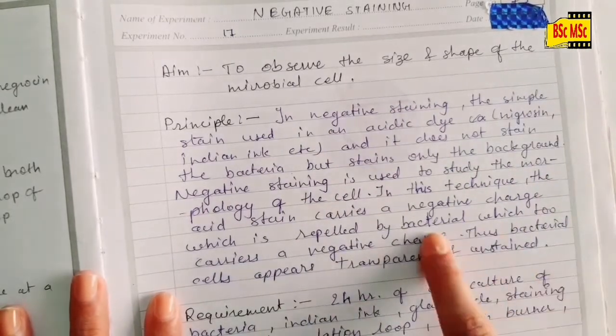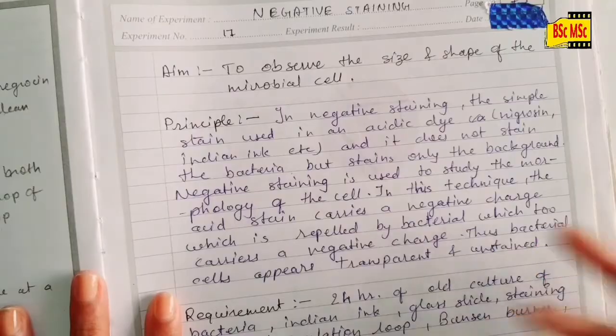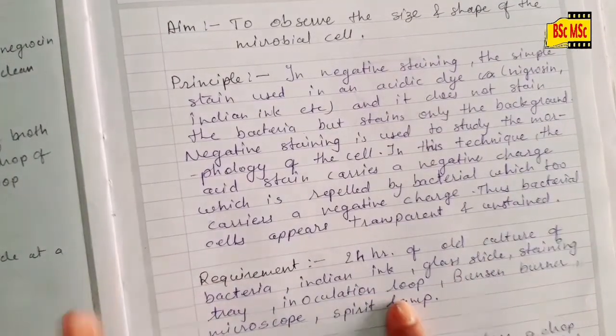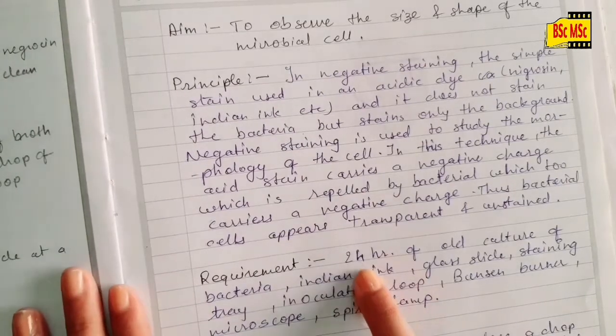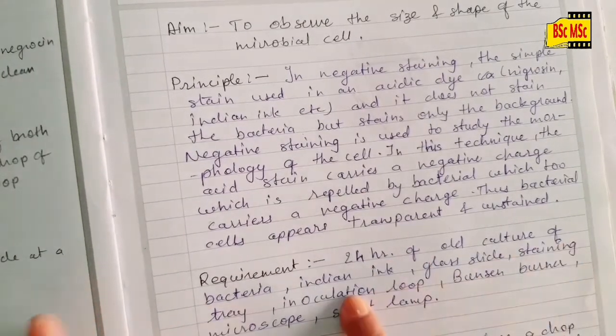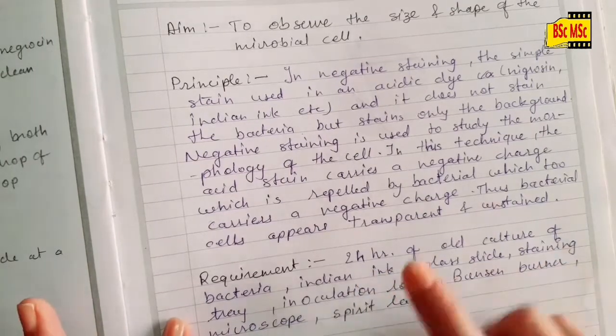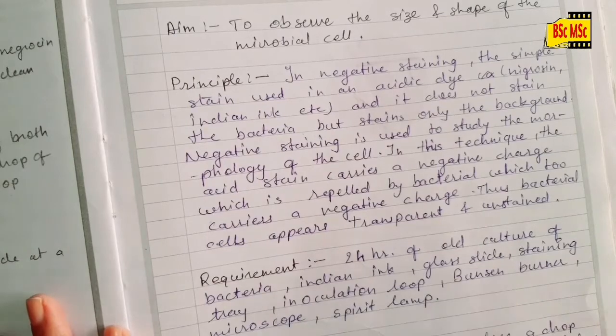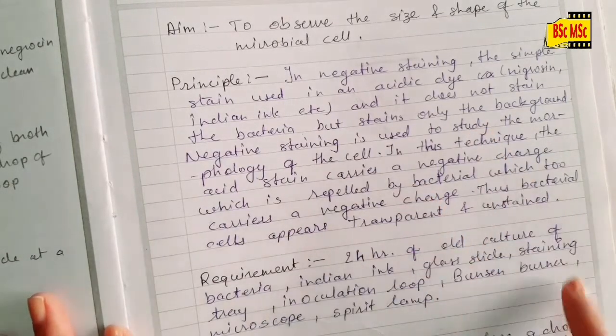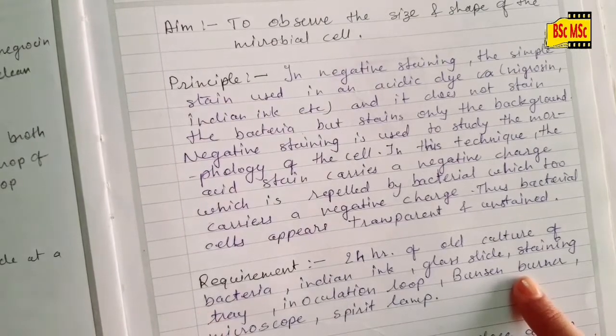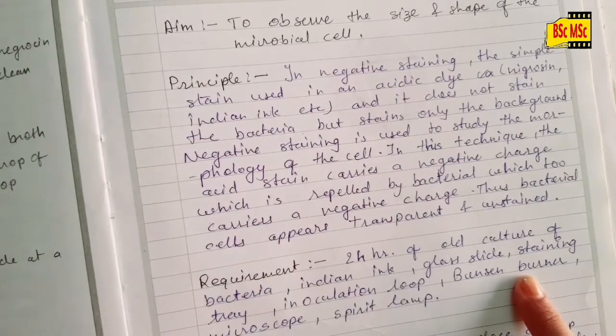Let's start with the procedure. The requirements: what you need for the experiment is 24-hour-old culture of bacteria, Indian ink or negrosine dye, two clean glass slides, staining tray, inoculating loop, Bunsen burner, microscope, and a spirit lamp.